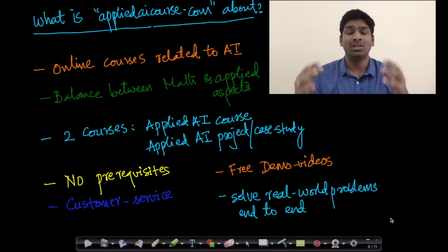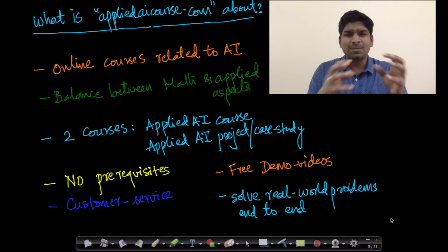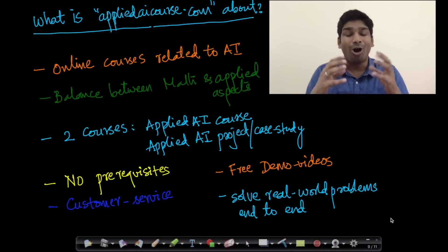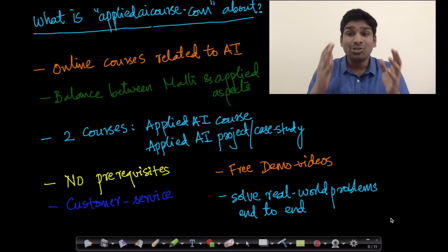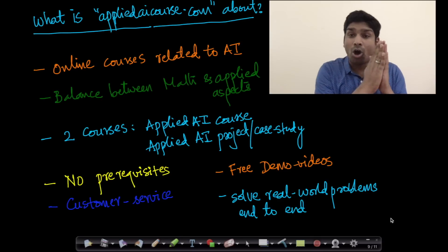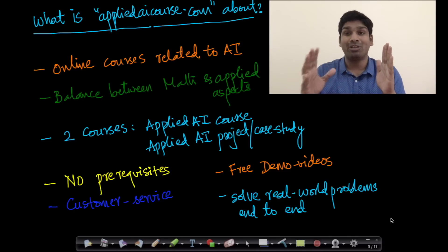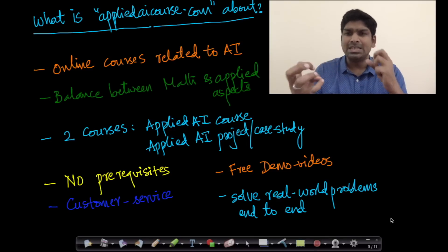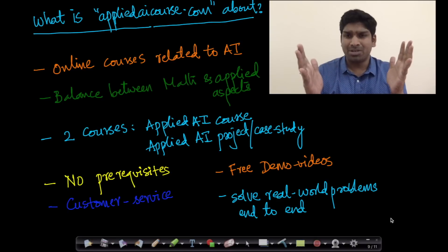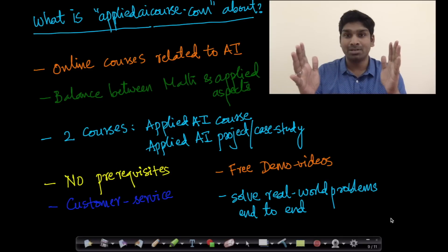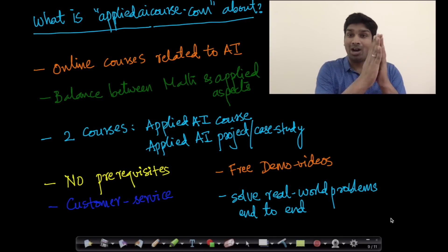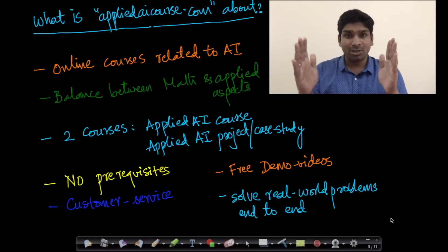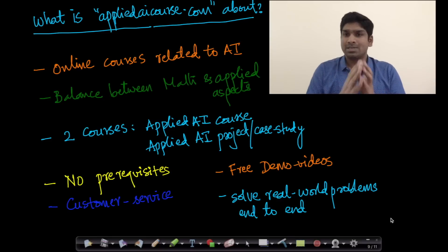The second course is called the Applied AI Project or Case Study. It is typically targeted towards undergraduate and graduate students who want to do their final year projects using AI. In this course we teach all the mathematical concepts needed to solve your problem — what we think is the right approach. We provide 100 hours of video content covering everything from basic Python programming up to solving real-world problems using AI, with no prerequisites whatsoever for either course.